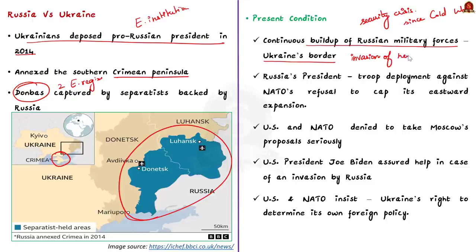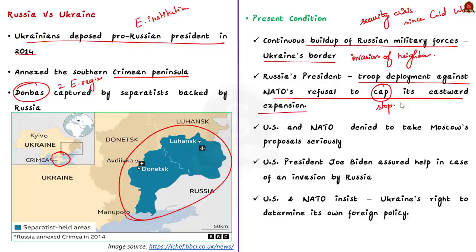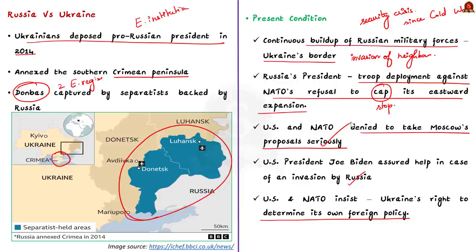At a press conference, Russia's president stated that the troop deployment is in response to NATO's refusal to cap its eastward expansion. Though the US and NATO agreed to talks with Moscow, they denied taking Moscow's proposals seriously. US President Joe Biden assured Ukrainian counterpart Vladimir Zelensky that in case of a Russian invasion, the US will respond decisively. The US and NATO insist that Ukraine and every other country has the right to determine its own foreign policy.